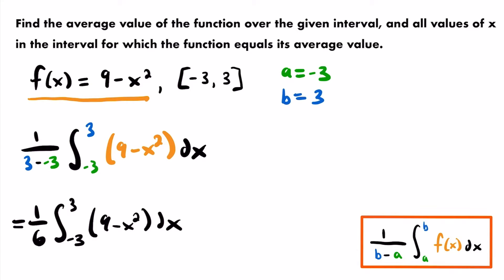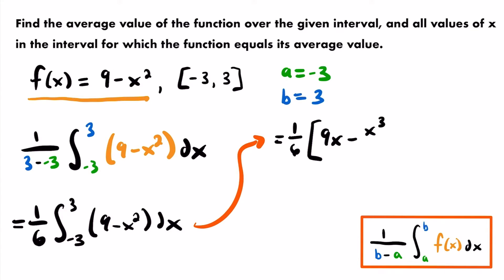Now we integrate this polynomial by handling each term individually. The integral of the constant 9 is 9x, since we're integrating with respect to x. For negative x squared, we use the power rule: add one to the exponent and divide by the new exponent, giving minus x cubed divided by 3. We then evaluate this antiderivative from negative 3 to 3.